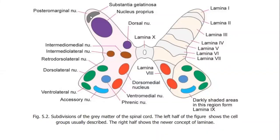Starting from the superiormost nucleus in the dorsal gray column: we have the posteromarginal nucleus, then below it is the substantia gelatinosa, next is nucleus proprius, and last is Clark's column, also called the dorsal nucleus or nucleus dorsalis.